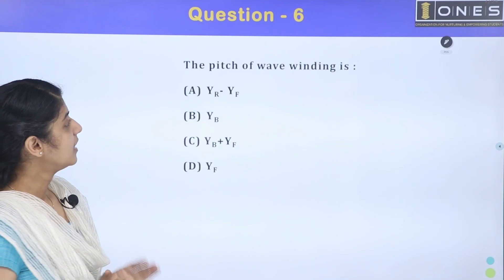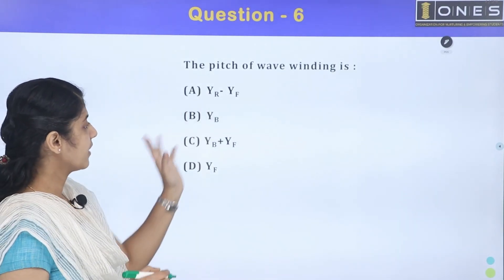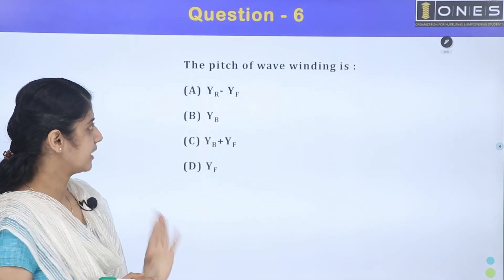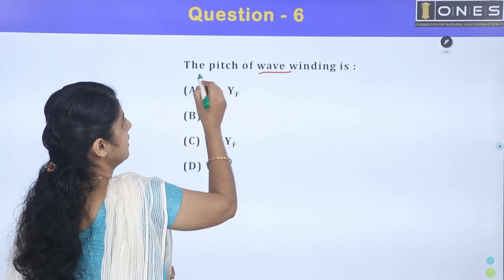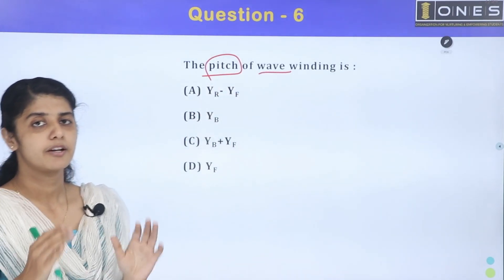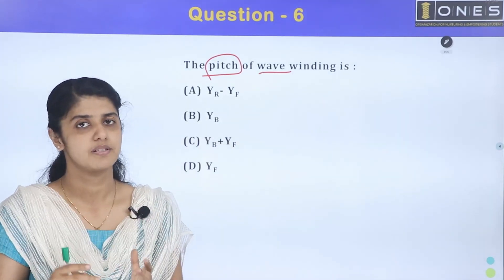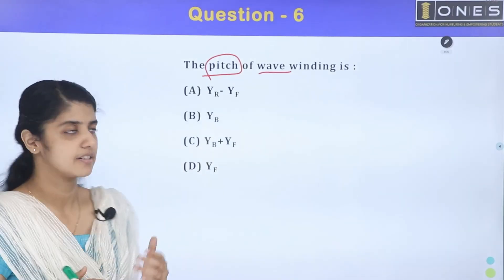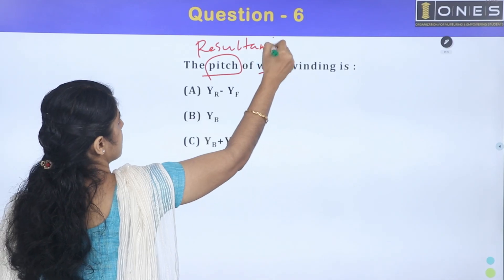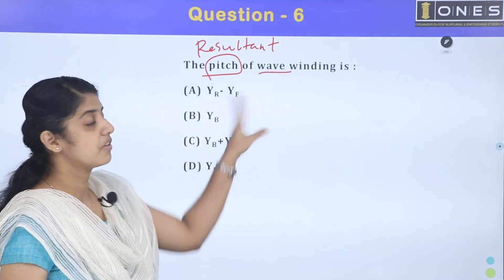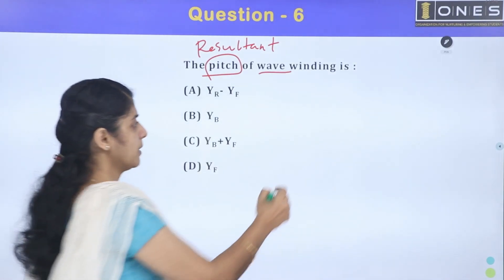Next question: the pitch of a wave winding is — options are YB minus YF, YB, YB plus YF, YF. For winding pitches, there are different types: front pitch, back pitch, commutator pitch, and resultant pitch. We are going to determine the resultant pitch for wave winding.